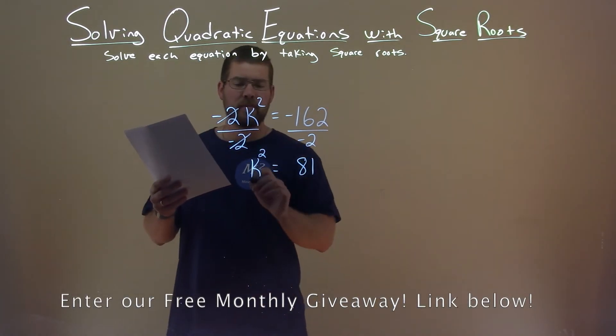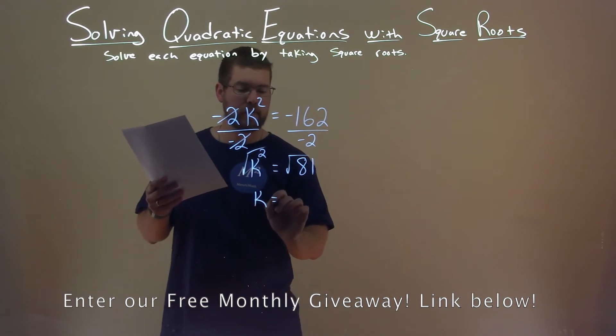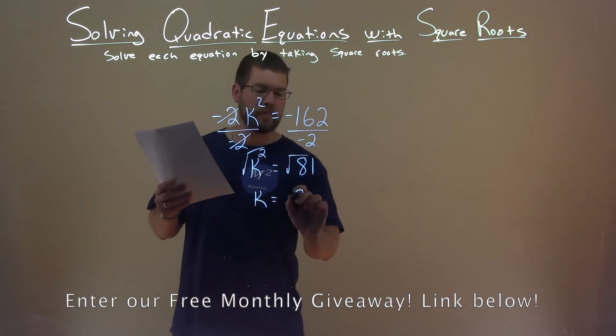Now we have k squared equals 81. Take the square root of both sides—that eliminates the squared on the left, so we have k by itself. The square root of 81 is 9.